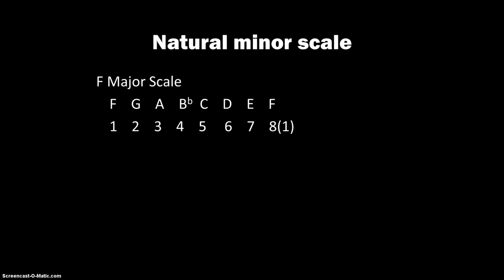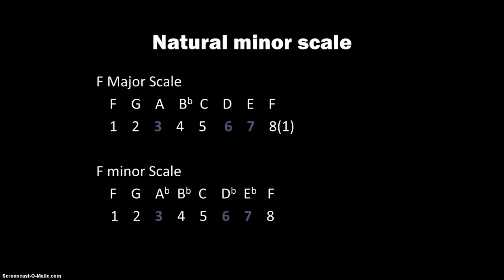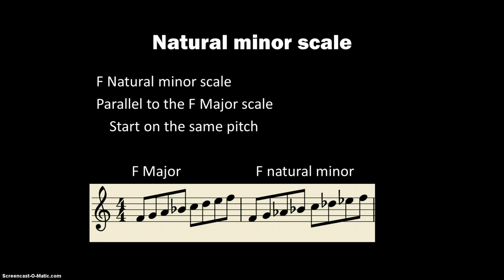Let's look at another example. Here is the F major scale. We know that it has one flat and the first flat is always B flat. Then we're going to target our third, sixth, and seventh notes and lower those by a half step. Since those notes were natural in the major scale, now they will be flatted. This is what it sounds like to play the F minor scale. F natural minor is parallel to the F major scale because they both start and end on the same pitch.